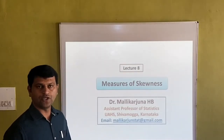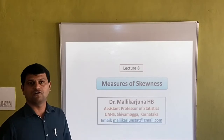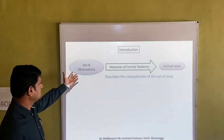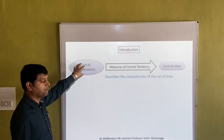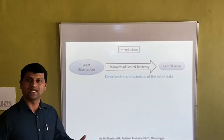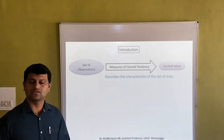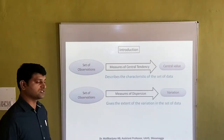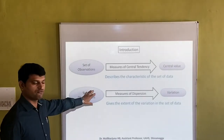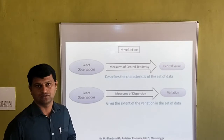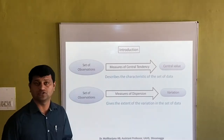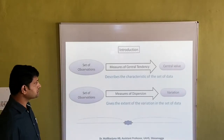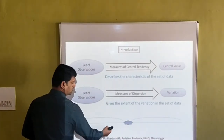Welcome back. In this video I am going to explain measures of skewness. In the last video I explained measures of central tendency. We applied them for a set of observations and got one central value that describes the characteristics of the data. I also explained measures of dispersion — for a set of observations, measures of dispersion give us the extent of variation, how much variation exists in the data.